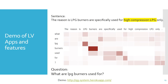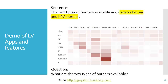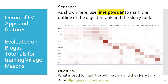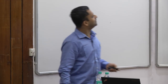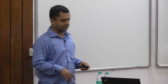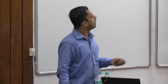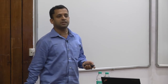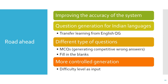Sometimes we have funny questions as well. For example: 'Use lime powder to mark the outline of the digestive tank in the slurry tank' — and somehow the system thought the outline was a tank, generating 'What is used to mark the outline tank in the slurry tank?' We need to certainly improve on it, but we're quite impressed with what we have right now. Our primary focus is transfer learning to quickly bootstrap and be able to generate questions for Indian languages, as well as different types of questions and question hardness.